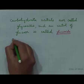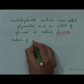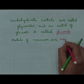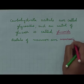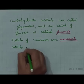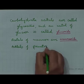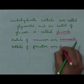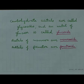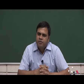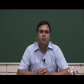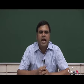Similarly, acetals of mannose are called mannosides, and acetals of fructose are called fructosides. It is very clear that carbohydrates in presence of HCl and alcohol form glycosides. Particularly in the case of glucose, we call them glucosides; for mannose, mannosides; and for fructose, fructosides.